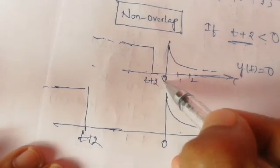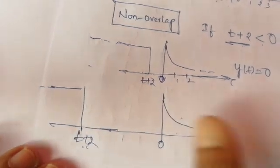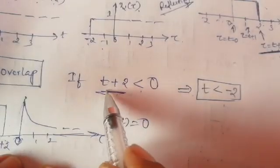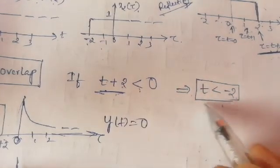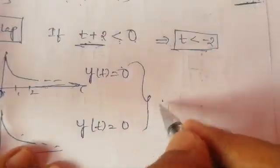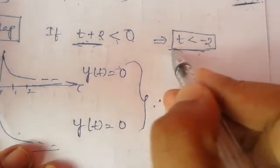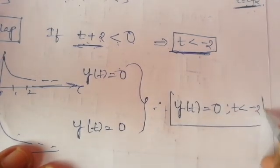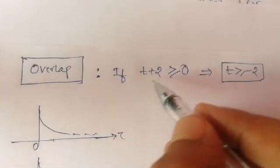Whether I place the second signal very close to zero or very far away, as long as t plus 2 is less than zero there is no overlap, and y of t equals zero. In other words, if t plus 2 is less than zero — equivalently t is less than minus 2 — the result is y of t equal to zero. This is the non-overlap case.